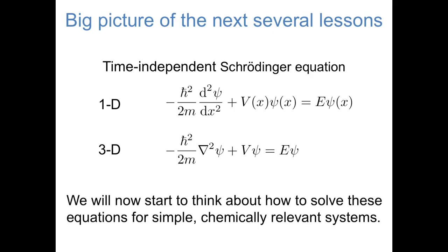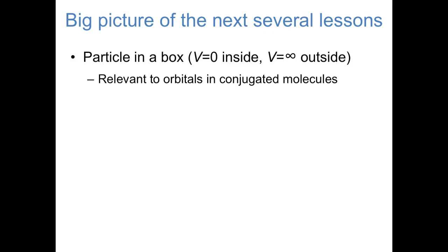In the next several lessons, we're going to start thinking about what this potential energy operator V looks like and how to solve the Schrödinger equation in different environments for different chemically relevant systems. The next three videos will focus on the particle in a box. For the particle in a box, the potential energy operator V is zero inside the box and infinity outside the box. These conditions ensure that the object can be inside the box but cannot be outside it. Although this sounds like an oversimplified model, it is chemically relevant — specifically, the particle in a box does a reasonable job predicting the energy levels of pi orbitals in conjugated molecules.